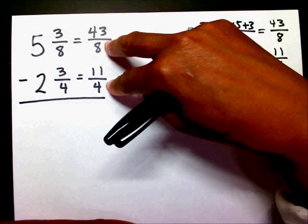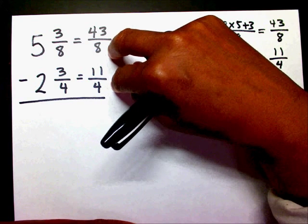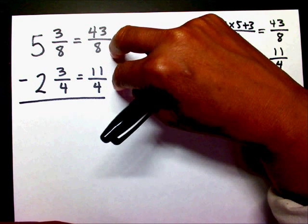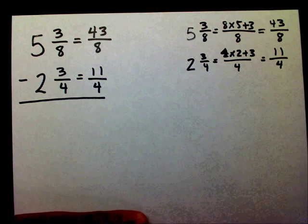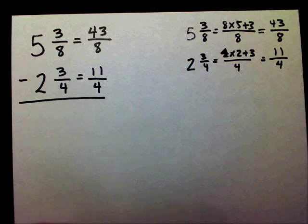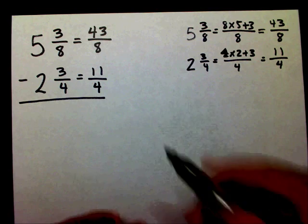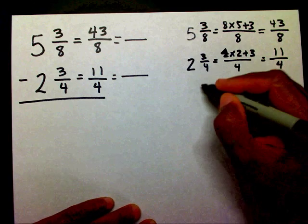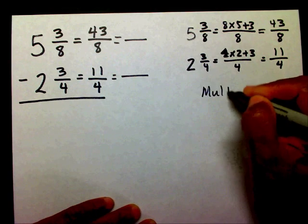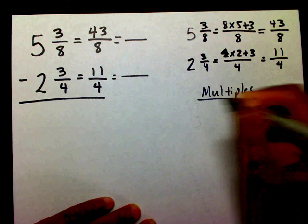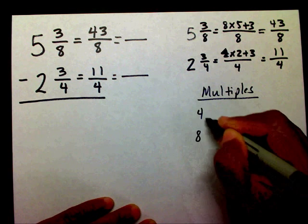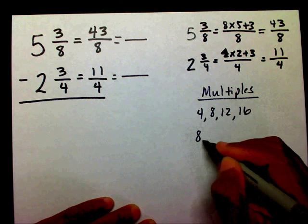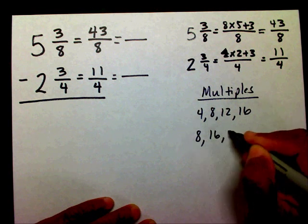We're going to use that same process that we used before in getting a new denominator. So I'm going to list my multiples of 4 and 8: 4, 8, 12, 16 for the multiples of 4, and 8, 16, 24 for the multiples of 8.